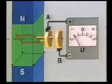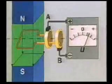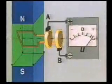If the loop rotates, it develops a voltage of changing direction, that is, an alternating voltage.